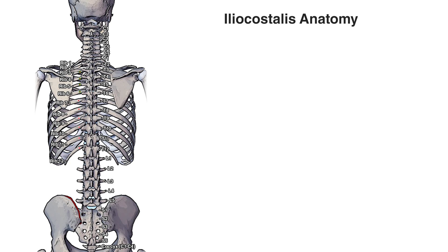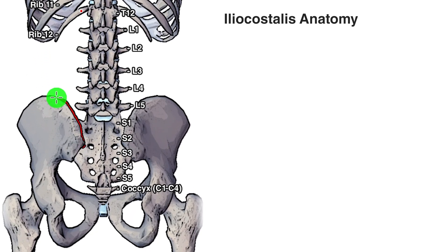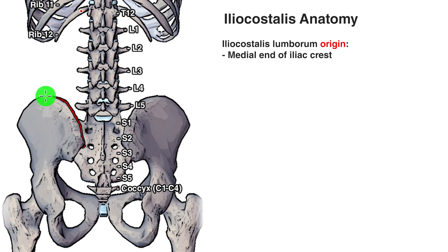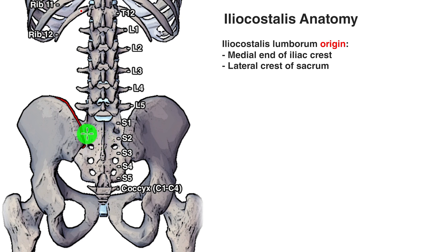Let's go over the origins of the iliocostalis lumborum. It originates on the medial end of the iliac crest — the iliac crest is this curved section that runs across the top of the hip. There's also an origin point on the sacrum, specifically on the lateral crest of the sacrum. The sacrum is this bone here, with sections S1 through S5. So the iliocostalis lumborum originates on the medial end of the iliac crest and the lateral crest of the sacrum.